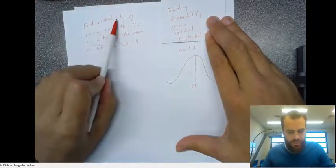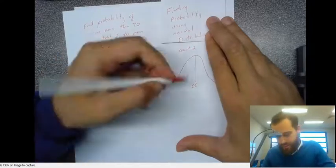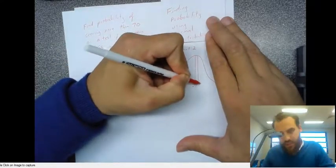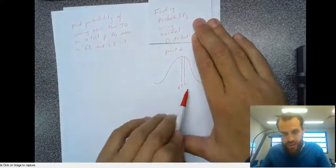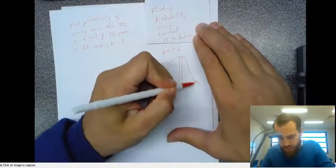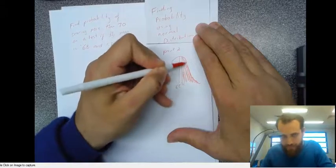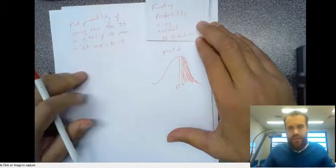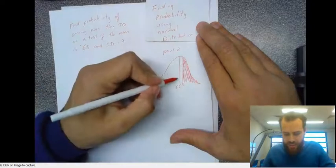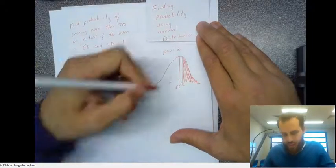Find the probability of scoring more than 70 on a test. There's 70 — that's just above 68, which makes sense. We want to know the probability of scoring more than that. And the standard deviation — you can just note it over here somewhere — the standard deviation is equal to 9.